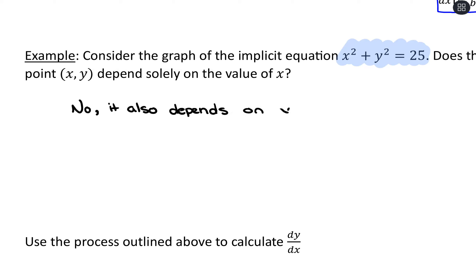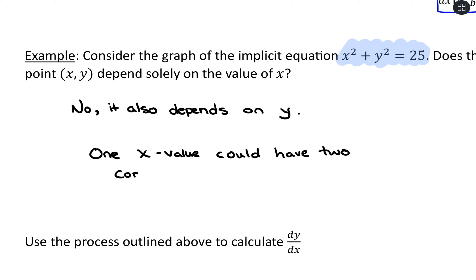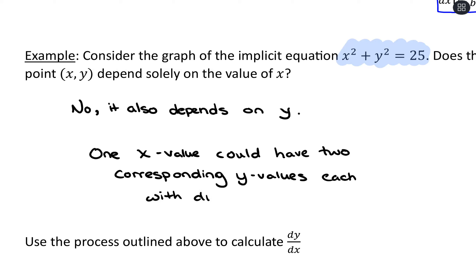The slope also depends on y — we would need to know the y coordinate to know which slope we have. The key point is that one x value could have two corresponding y values, each with different slopes of the tangent line.